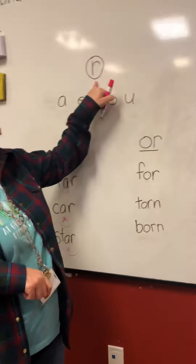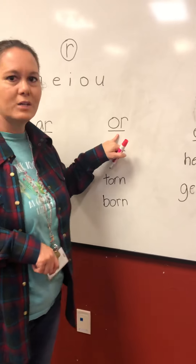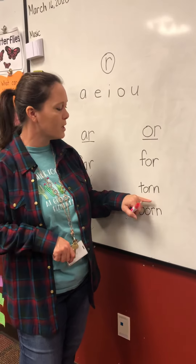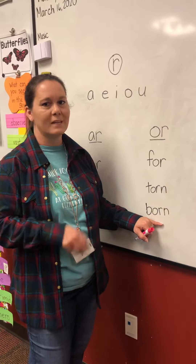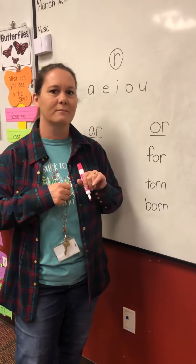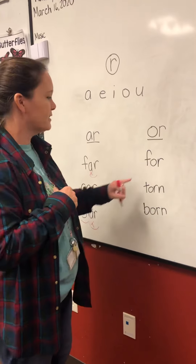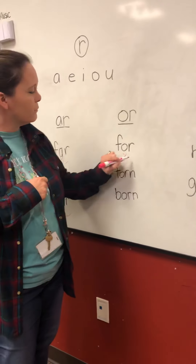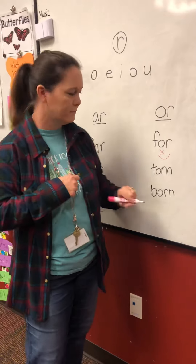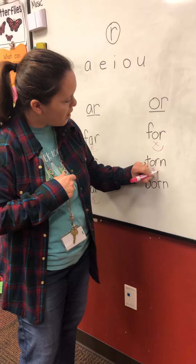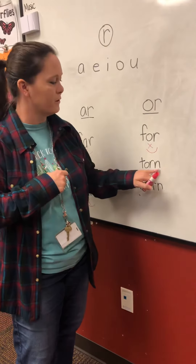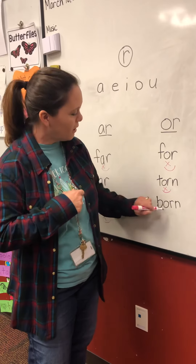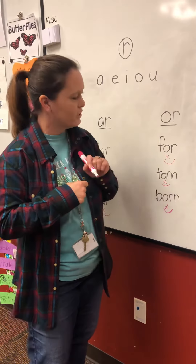Alright, when we pair the bossy R with O, it changes the O sound to OR. For example we have for, torn, and born. Can you think of some more words that would have the OR sound? Alright let's go ahead and mark them. We have our vowel and then we have to arc our new diphthong sound. Arc just the O and the R. Do not put the N in the arc, and don't put the consonant T in the arc. And born is the same way.